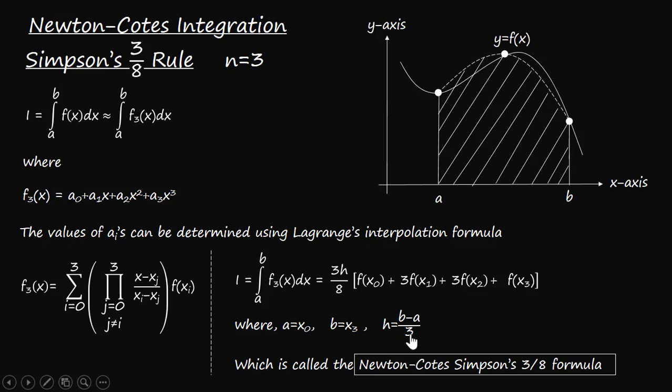Why is it b minus a upon 3? Because here we are considering third order polynomial function and that is determined by four points. So four points is dividing the given interval a to b into three equal parts, so we are using h equals to b minus a divided by 3.